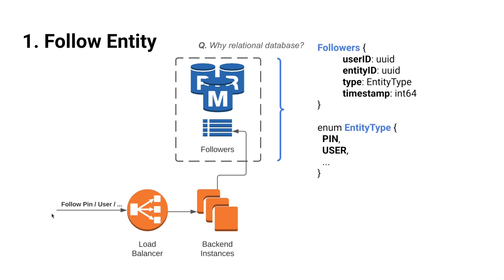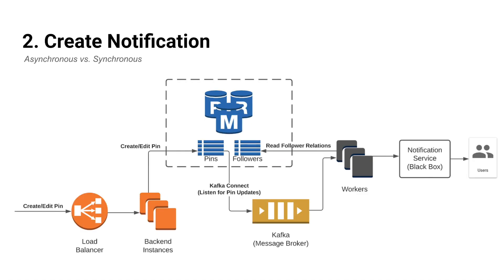Here's a sample data schema for the follower table. We would have a column for user and entity UUIDs, another column to specify what type of entity it is, and a column to store the timestamp of when the user started following this entity. Now that we have the follower relationship persisted in the database, we need to figure out a way to create notifications whenever followed pins or users make updates.